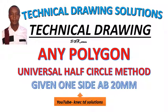Today I want us to go through drawing of any polygon using universal half circle method. Given one side, AB has 20 millimeters.